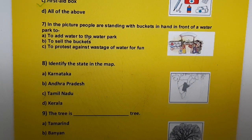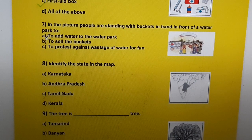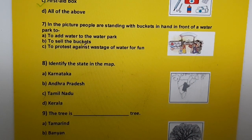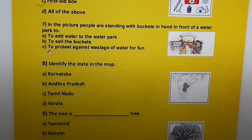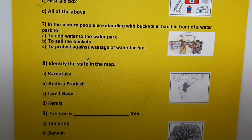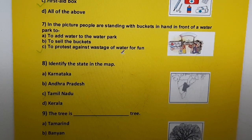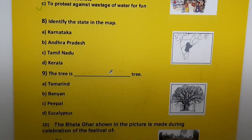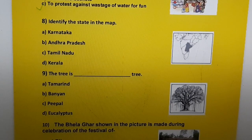Question seven: In the picture, people are standing with buckets in hands in front of a water park — a) to add water to the water park, b) to sell the buckets, c) to protest against waste of water for fun. The correct answer is c) to protest against waste of water for fun.